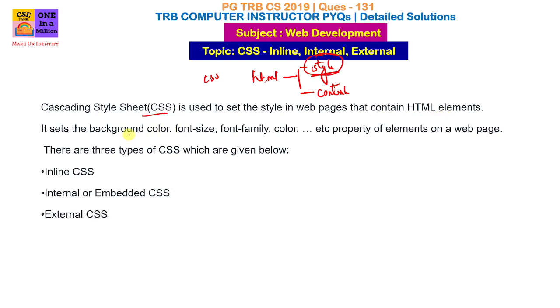Cascading Style Sheet is used to set the style in the web page that contains HTML elements. What we have done is background color, font size, font family, color — these style properties are set in our web page.